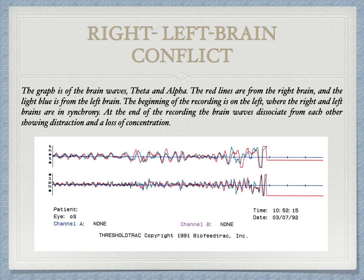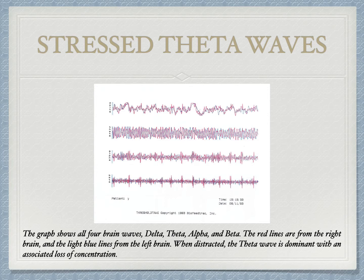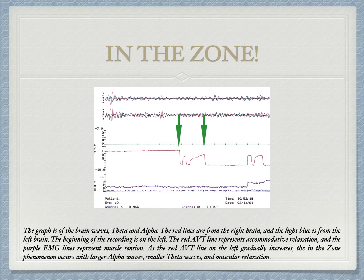The next graph shows all four brainwaves. We particularly want to look at the bottom of the graph showing the beta waves. As can be seen, the beta waves are very large and intense compared to the other three brainwave patterns. Under pressure, the beta wave is dominant. Anxiety can also affect the theta waves with an associated loss of concentration.